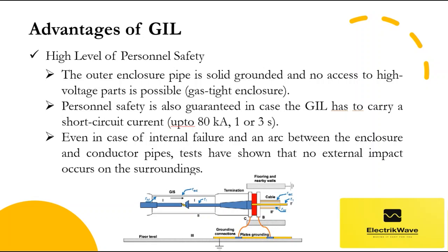GIL has a high level of personnel safety. The outer enclosure pipe is solidly grounded and no access to high voltage parts is possible due to the gas-tight enclosure. Personnel safety is also guaranteed in case the GIL has to carry a short circuit current of 50, 63, or 80 kiloampere, up to 1 second or 3 seconds. Even in case of internal failure and an arc between the enclosure and conductor pipes, tests have shown that no external impact occurs on the surroundings.